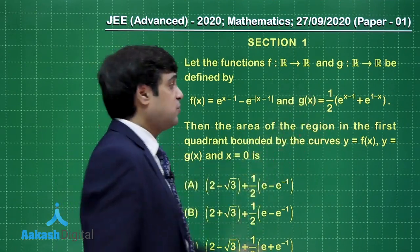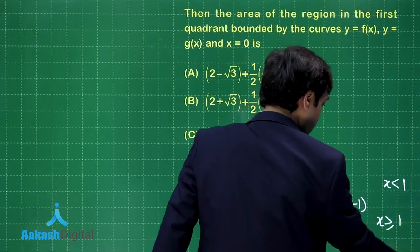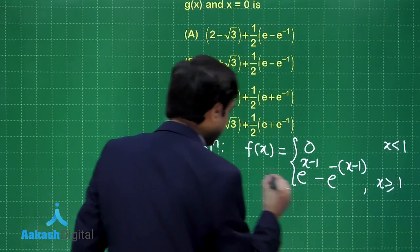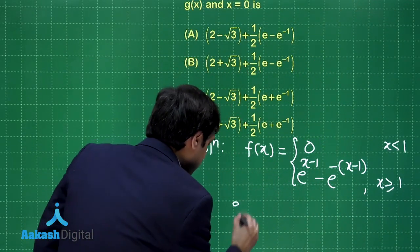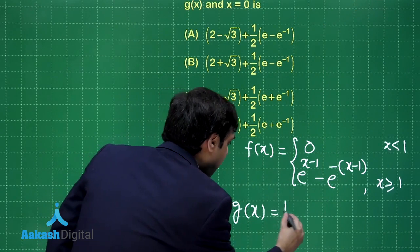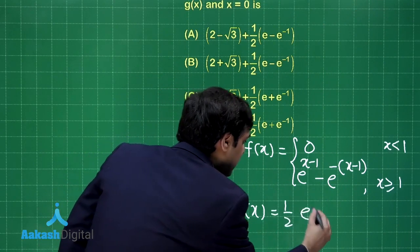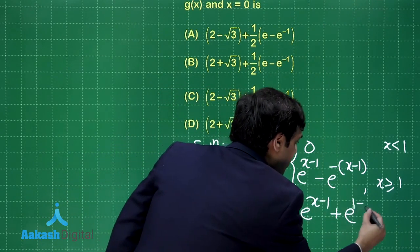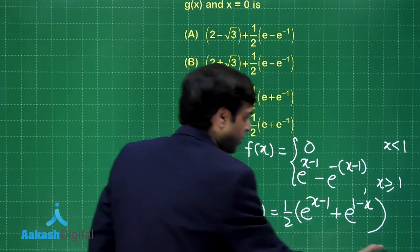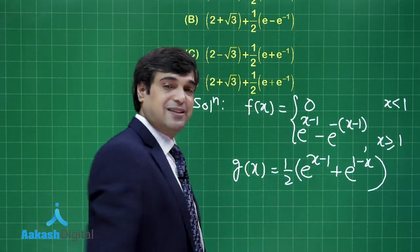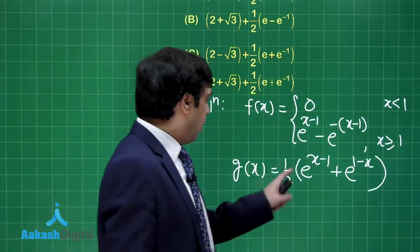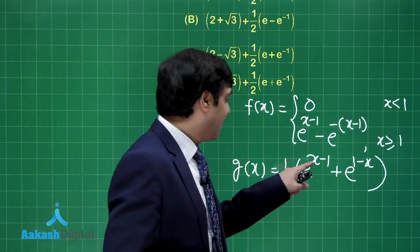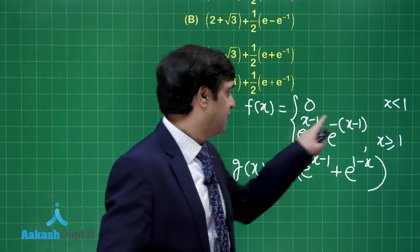And g(x) = ½(e^(x−1) + e^(1−x)). Let's write that down: g(x) = ½[e^(x−1) + e^(1−x)]. Now to find where these two curves intersect — the first piece of f is identically 0 so we need the intersection of g and the second piece of f for x > 1.